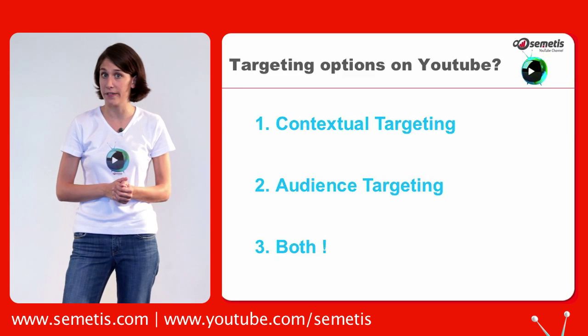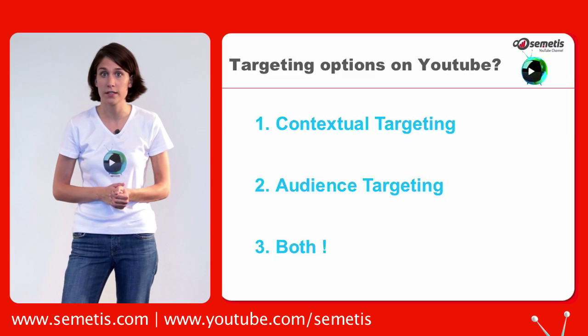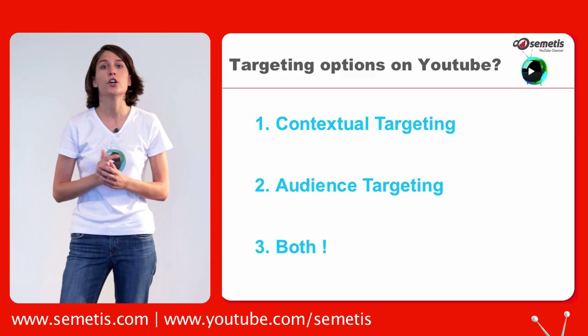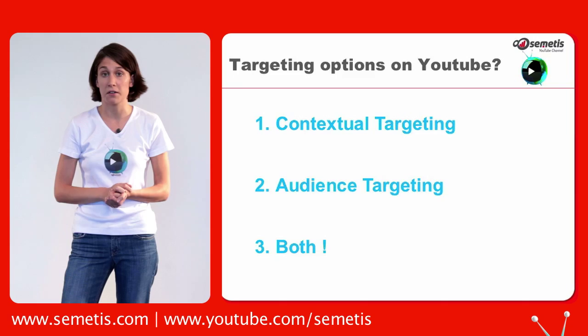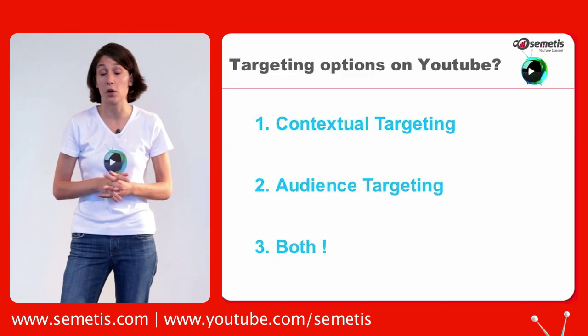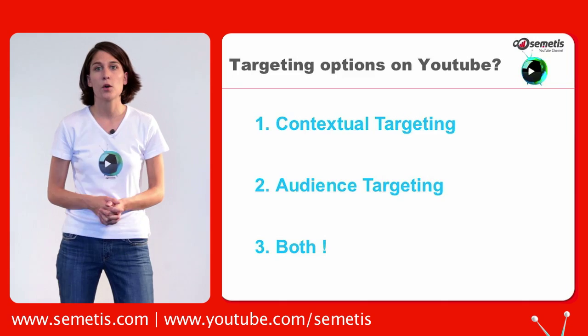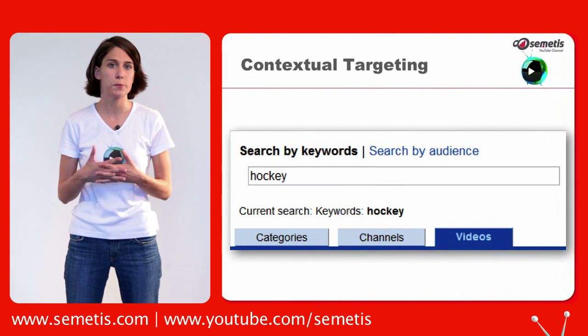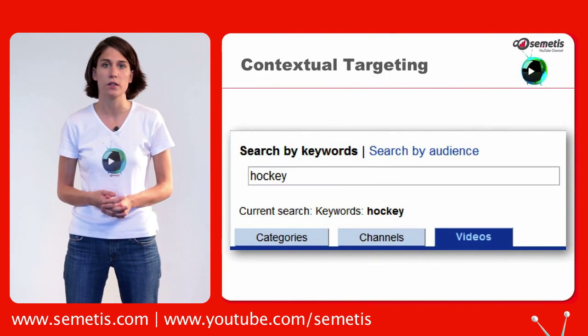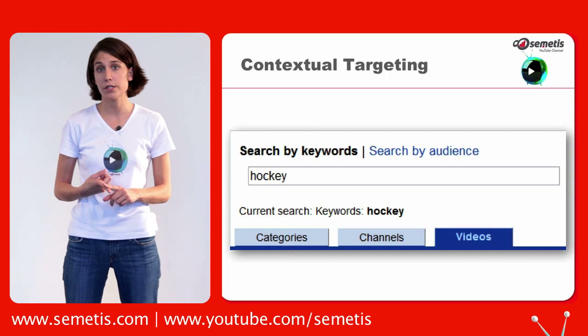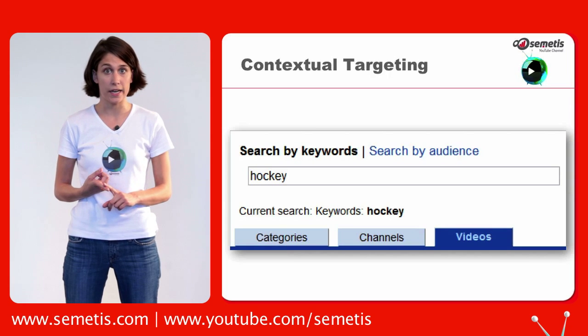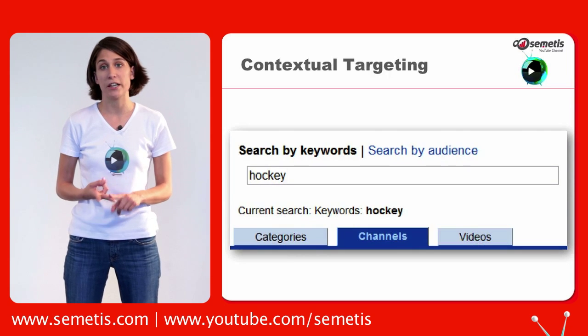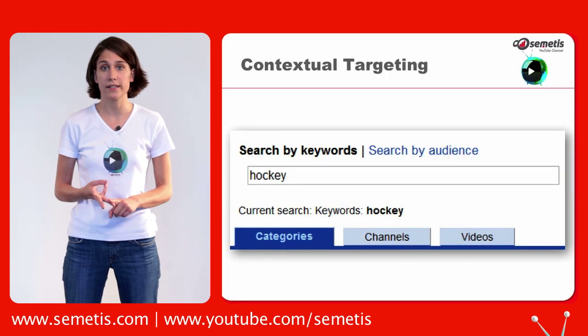First, you can do advanced contextual targeting or do audience targeting. Finally, you can also use both. With contextual targeting, you can choose how specific you want to be. Videos are the most precise, followed by channels and then categories.